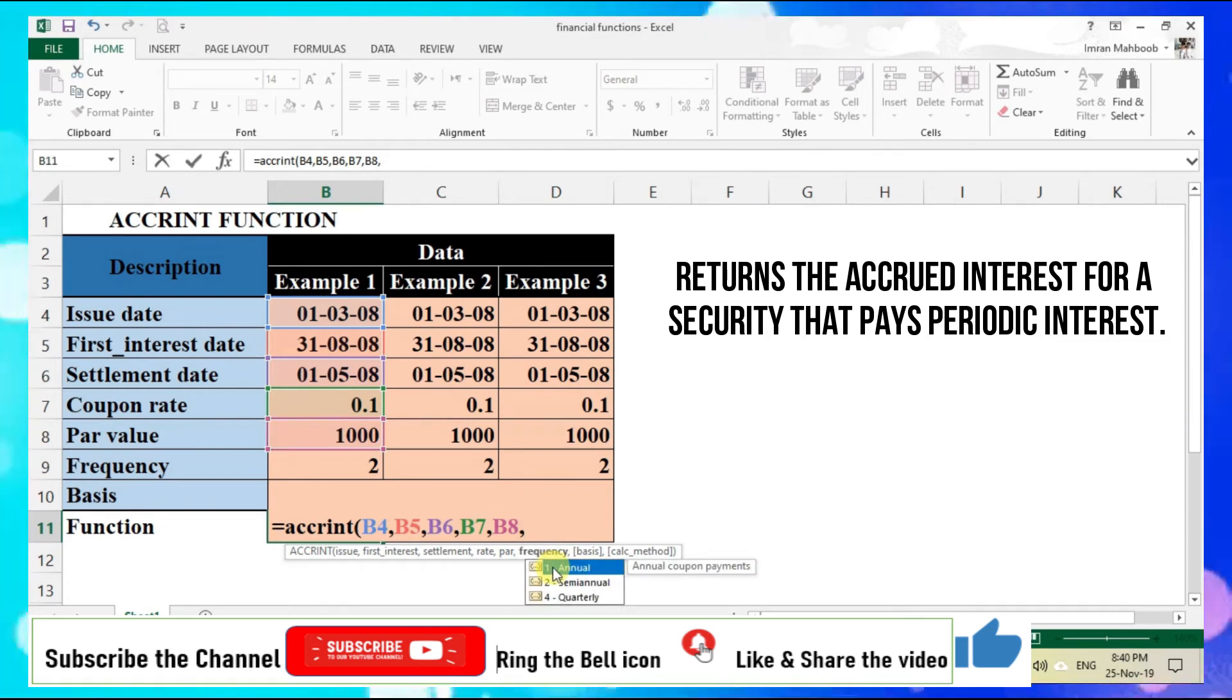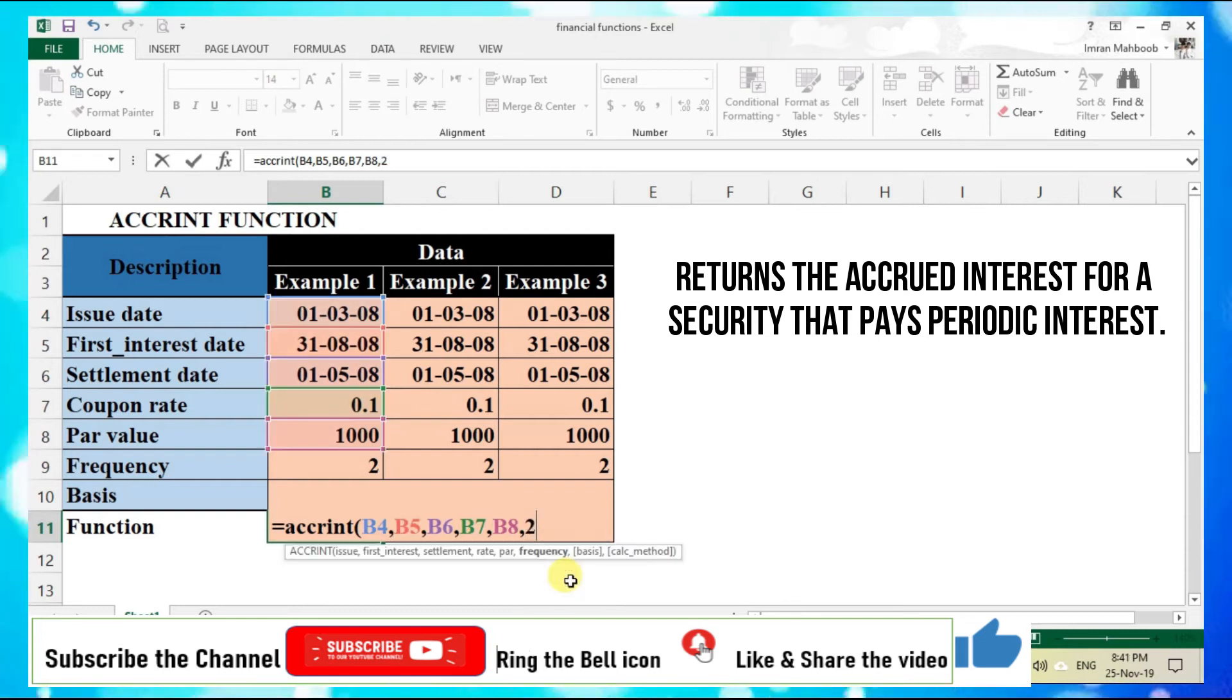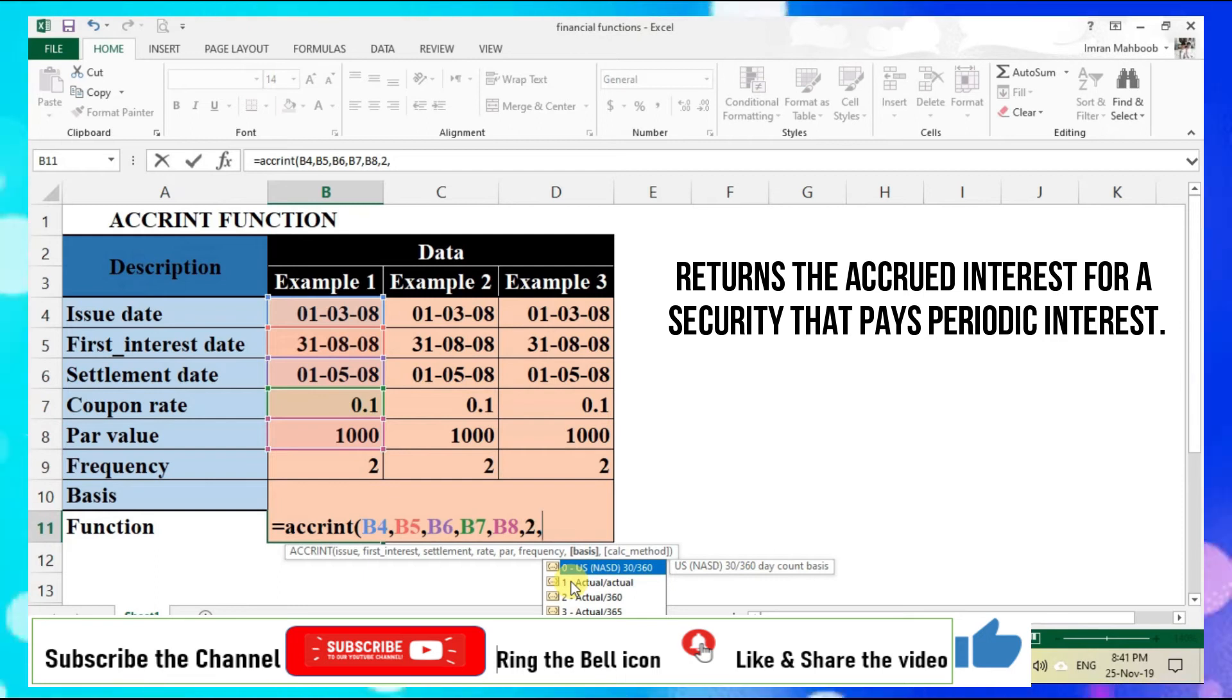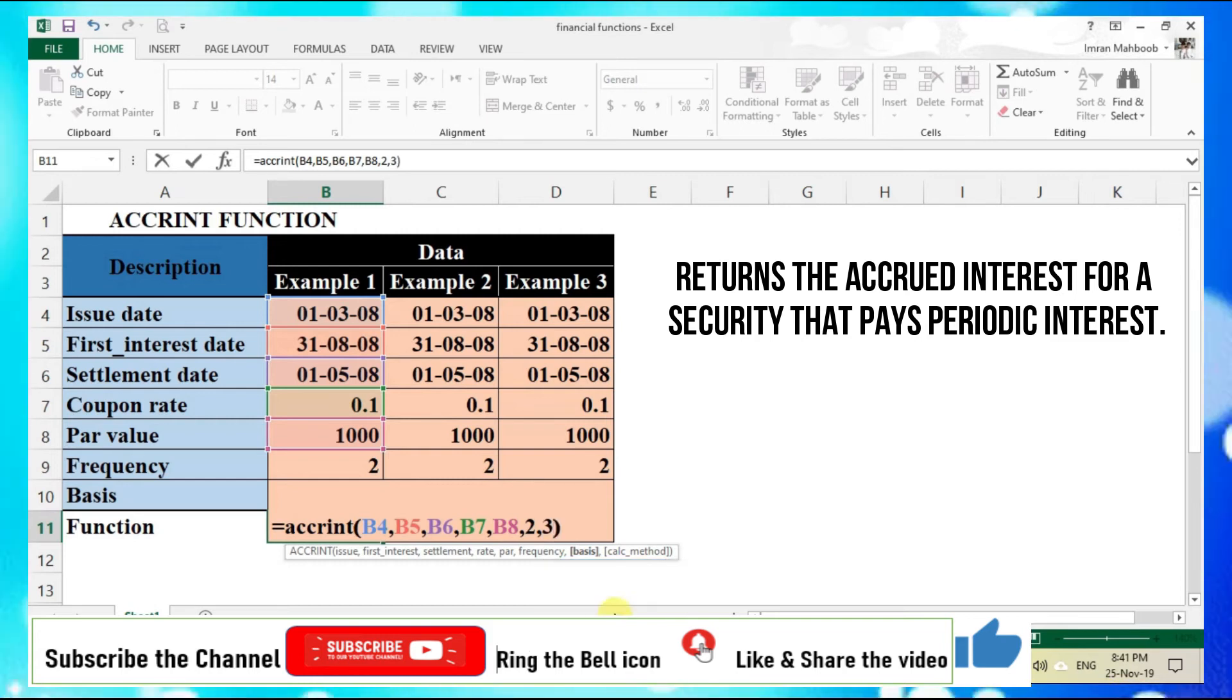Comma, coupon rate comma, par value comma. Here we have an option to select whether we find out the interest rate annually, semi-annually, or quarterly. I will say semi-annually comma. Now for basis, we have five options. I would like to give number three because I want to give actual number of days per month and 365 days for a year, so I enter number three.